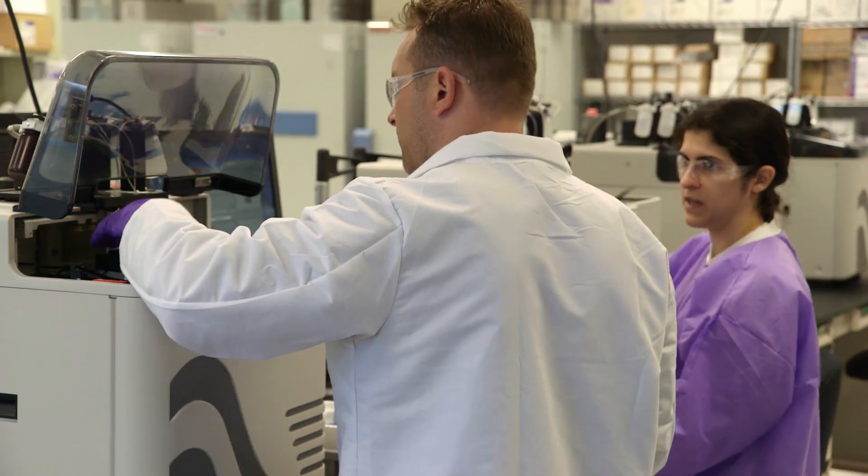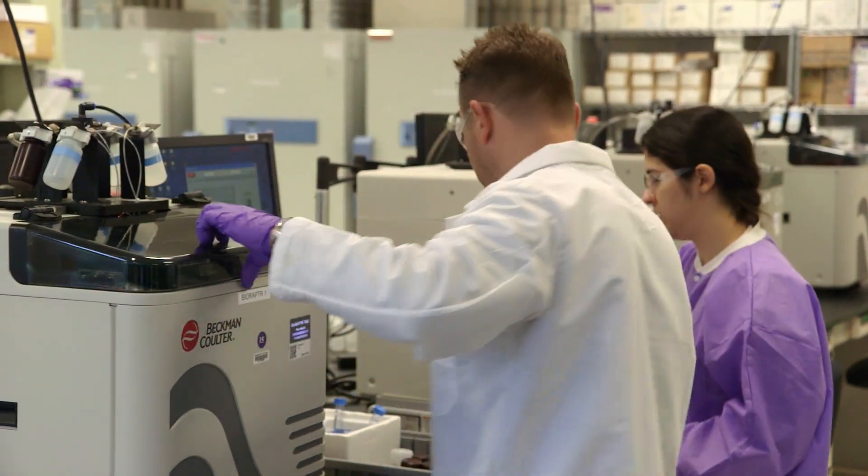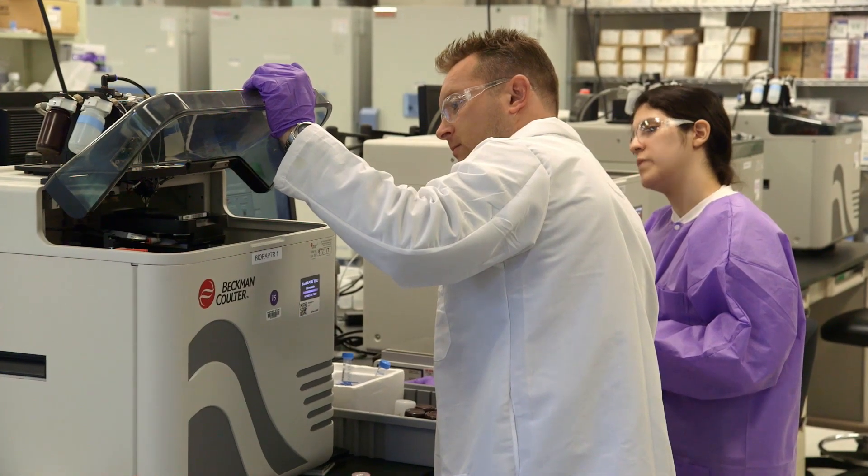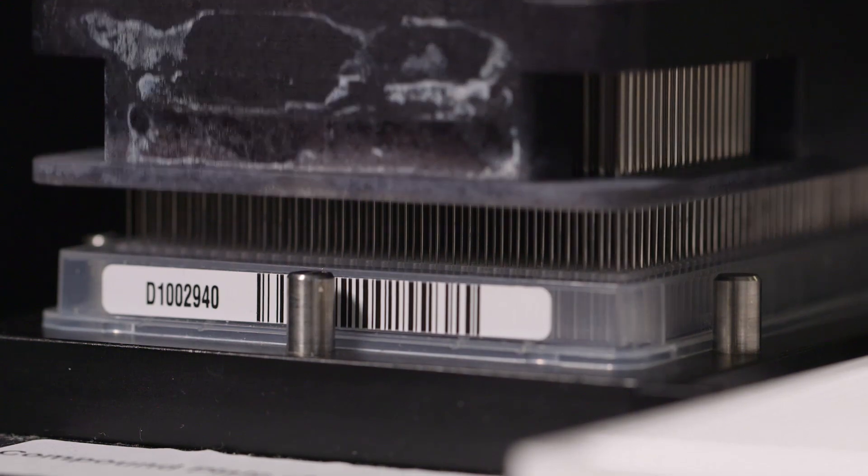Biologists first try out a new assay by conducting small-scale tests, using compounds with known activities to see if they can be detected. If successful, a larger-scale test of the assay, using a few thousand compounds, is performed.